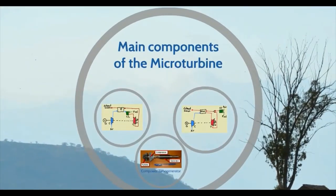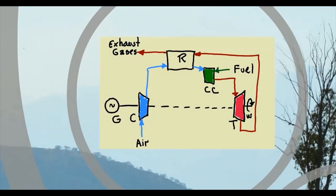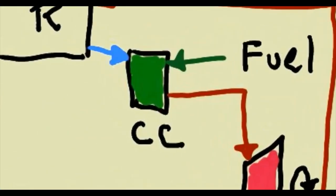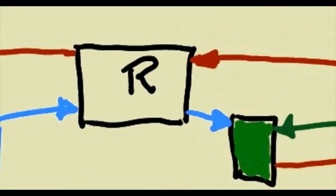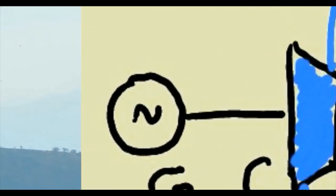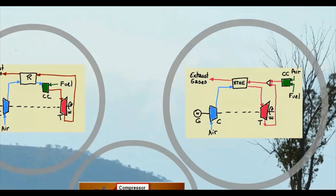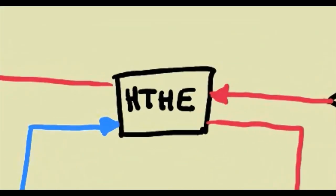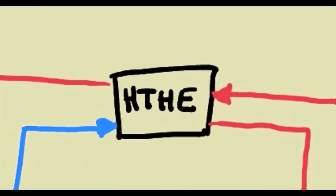The main components of a microturbine are a compressor, a turbine, a combustion chamber, a heat exchanger or recuperator, and an electric generator, which is normally coupled to the same shaft as the turbine and compressor. In the externally fired microturbine, a high-temperature heat exchanger is required in the system.